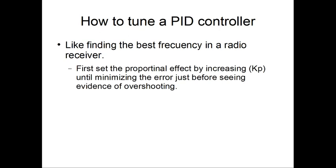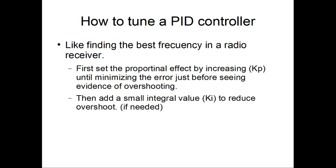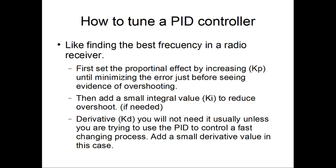First, set the proportional effect by increasing Kp until minimizing the error just before seeing evidence of overshooting. Then, add a small integral value to reduce overshoot. The derivative effect, you will not usually need it unless you are trying to use the PID to control a fast-changing process. If this is the case, add a small derivative value for this particular case.